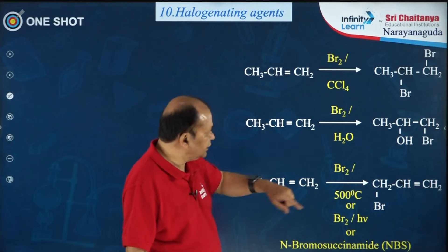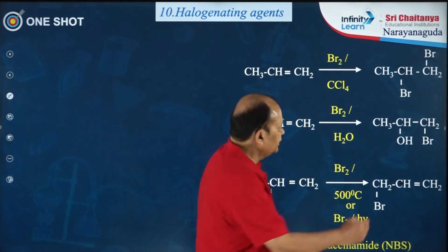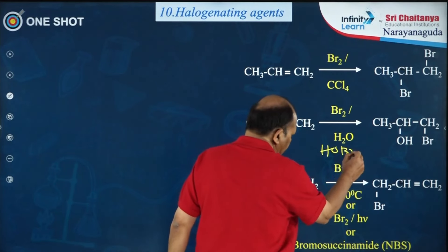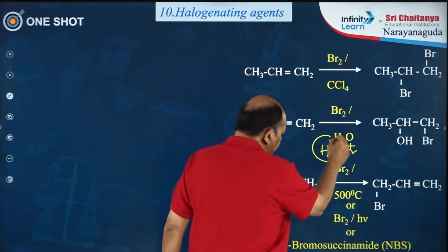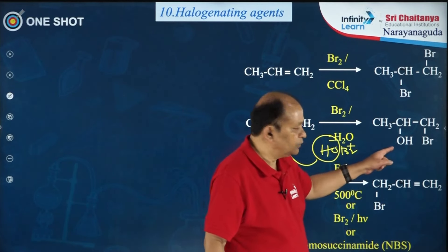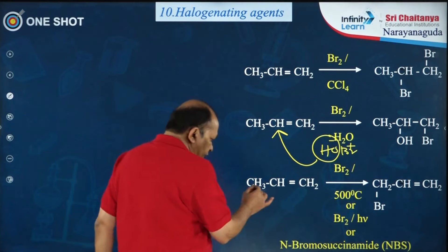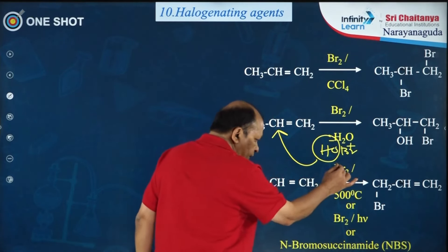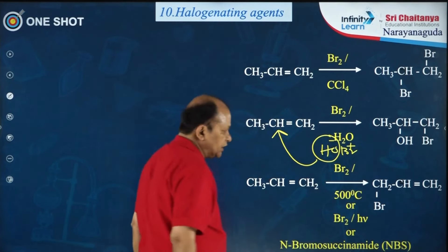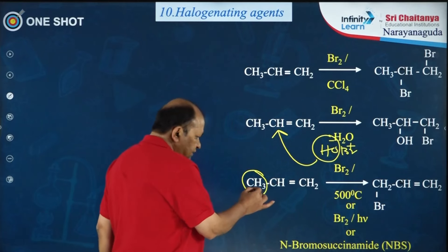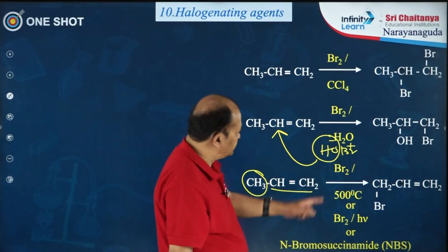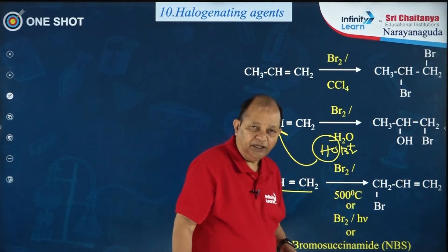If you treat propene with bromine water, you get the halohydrin product — HOBr forms, where OH⁻ and Br⁺ are generated, and the negatively charged species goes to the sp2 carbon having fewer hydrogens. When propene reacts with bromine at high temperature, in the presence of sunlight, or by treating with N-bromosuccinimide, allylic bromination takes place at the allylic carbon.